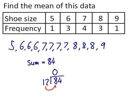12 into 84 goes 7 times. So the mean of this set of numbers is 7.